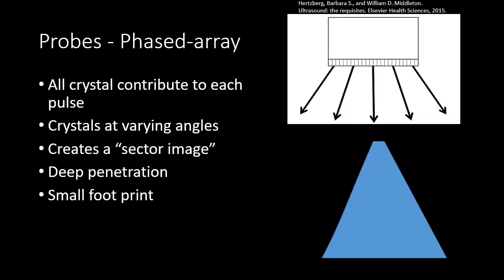The phased array probe has multiple crystals along the surface of the transducer that all fire together to generate a pulse. The crystals can send pulses out at varying angles to create a sector image. Phased array probes are traditionally lower frequency probes that allow for better penetration deeper into the soft tissues, but tend to have lower resolution than a linear probe. A key advantage is their small footprint, allowing imaging through narrow sonographic windows such as fontanelles in pediatrics or rib spaces in chest imaging — providing a wide field of view with high penetration at a sacrifice of resolution.